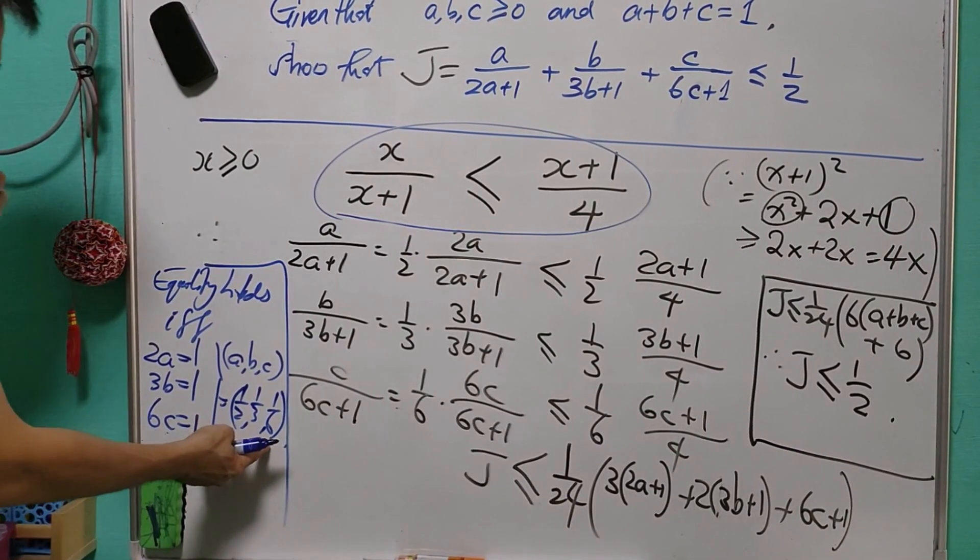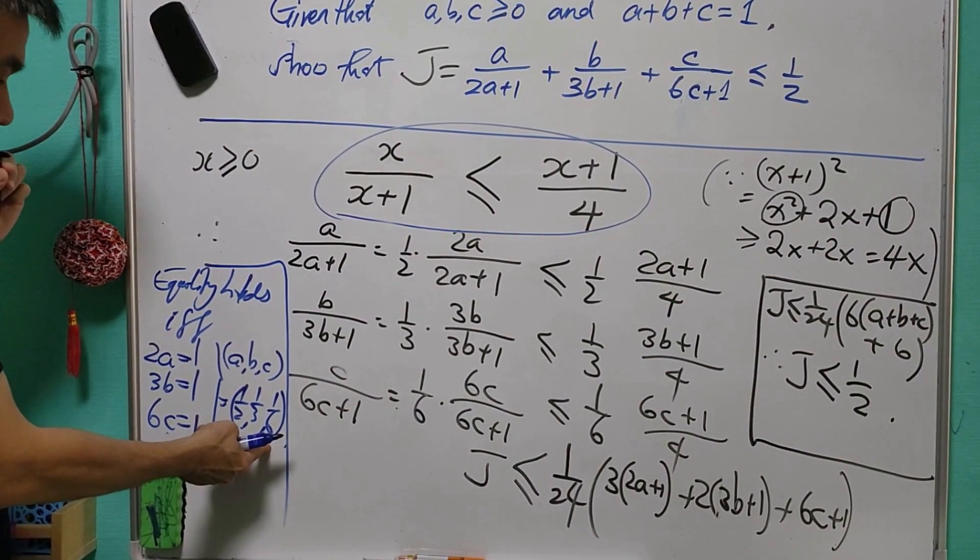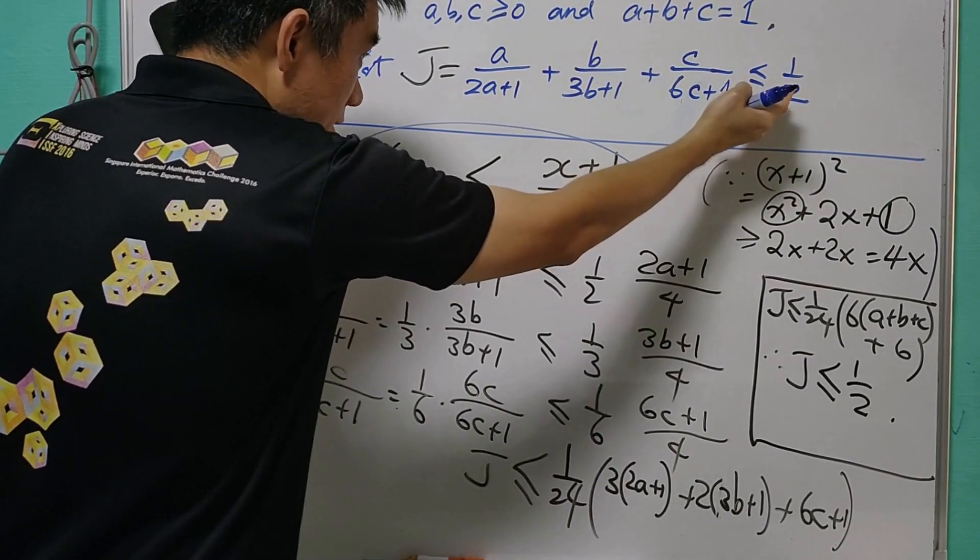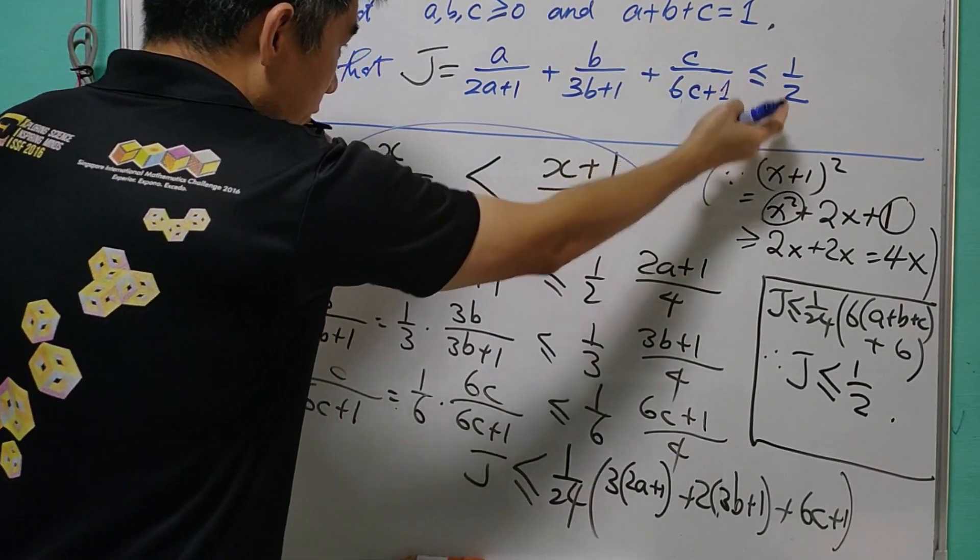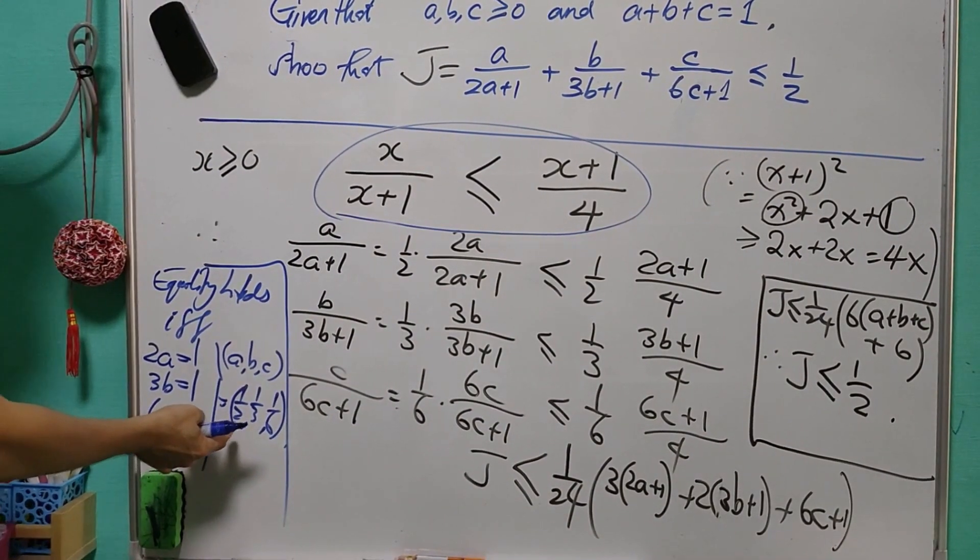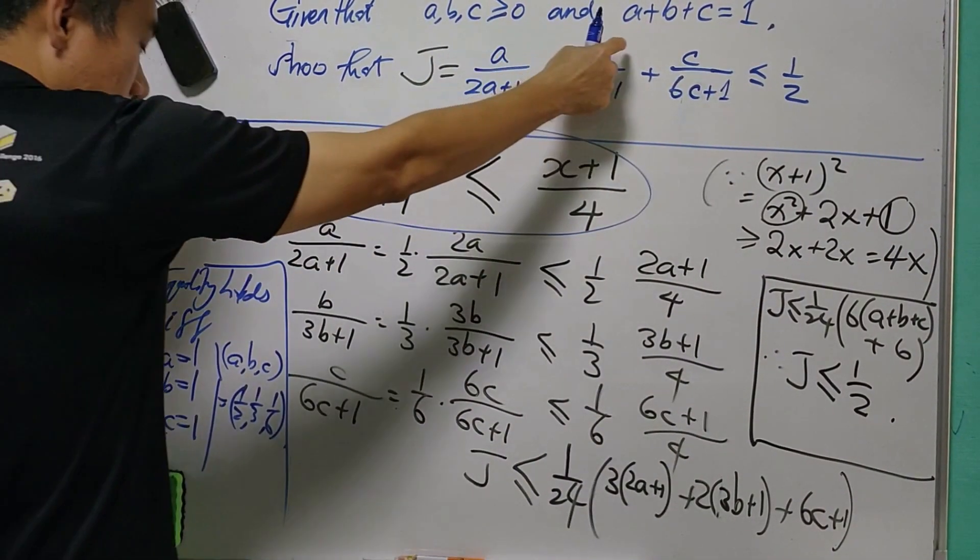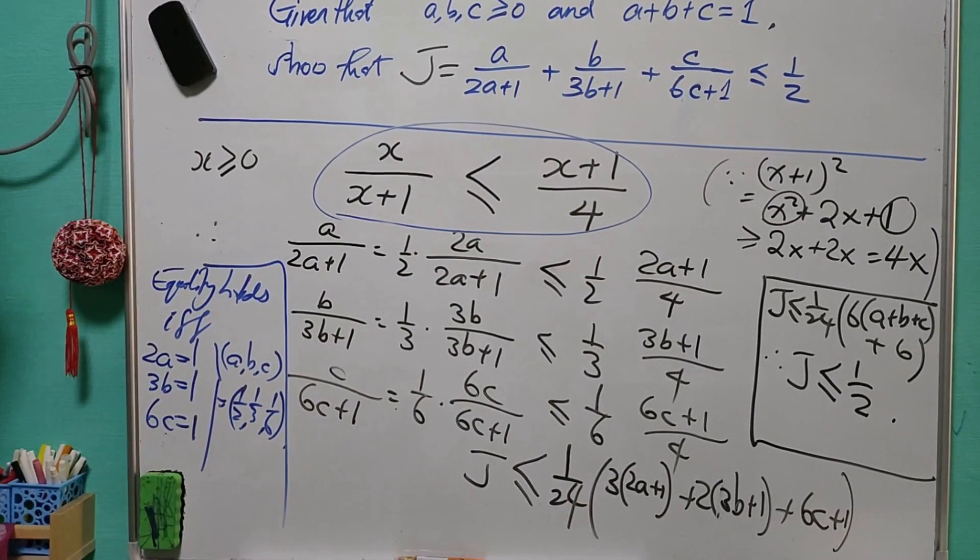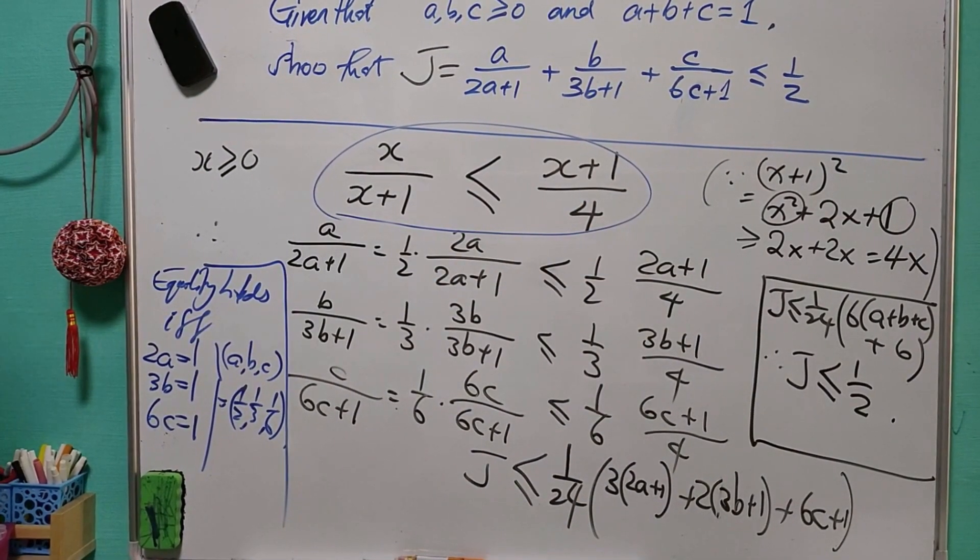And from here, we can see that the sum of ABC is exactly equal to 1, and it means that the value 1 over 2 is achievable. You can check by putting A equals to half, B equals to 1 over 3, and C equals to 1 over 6, and you will get J is equal to 1 over 2.